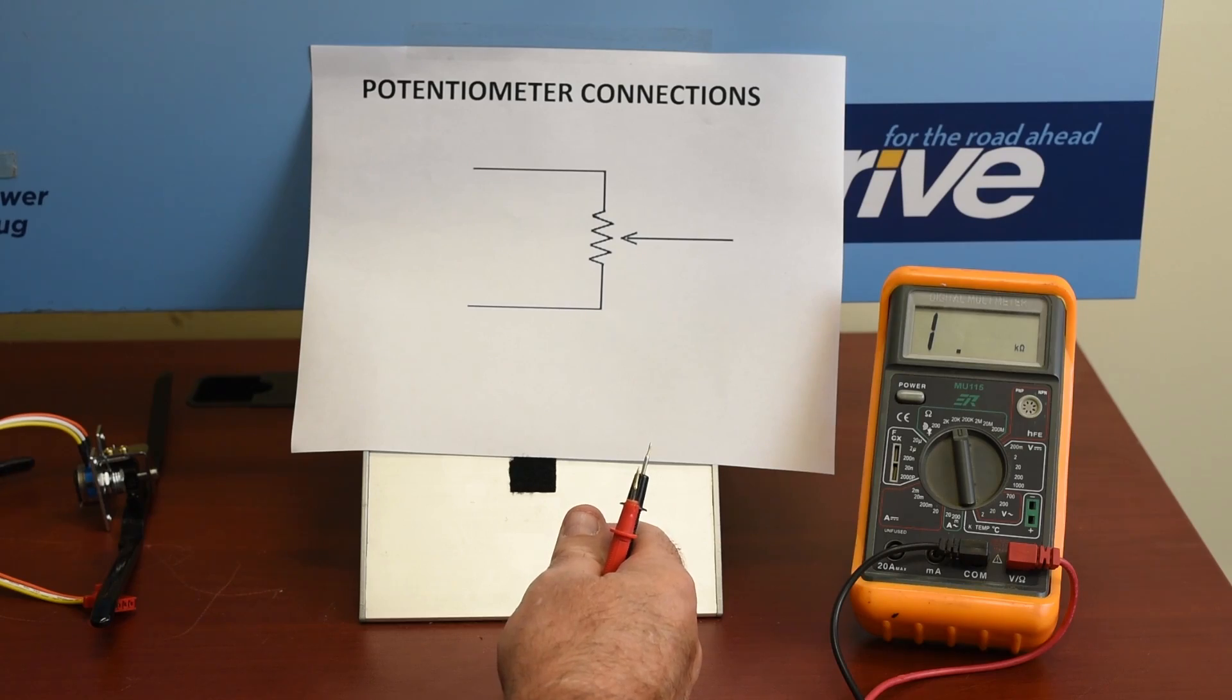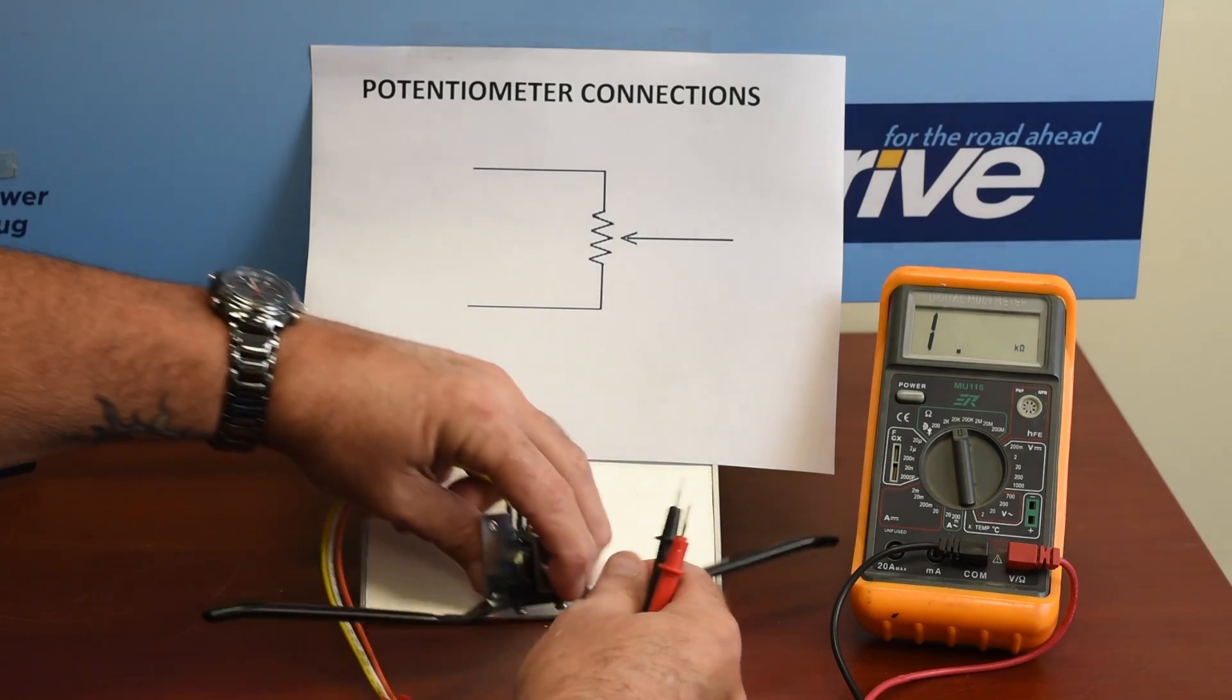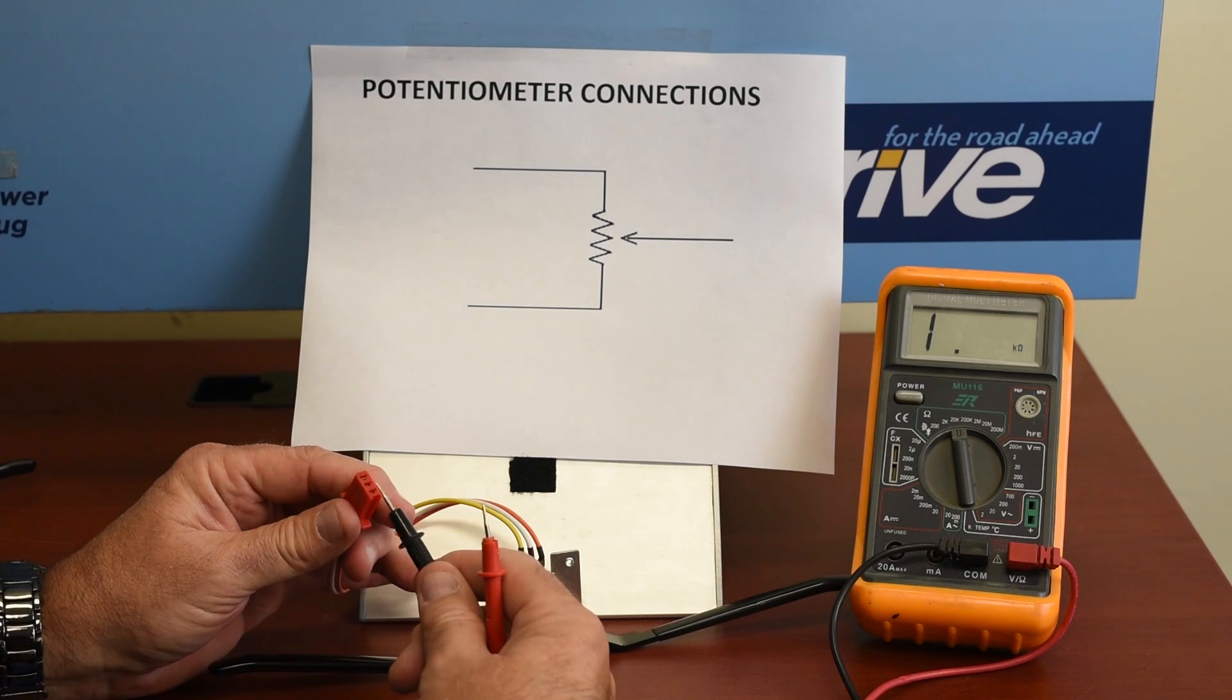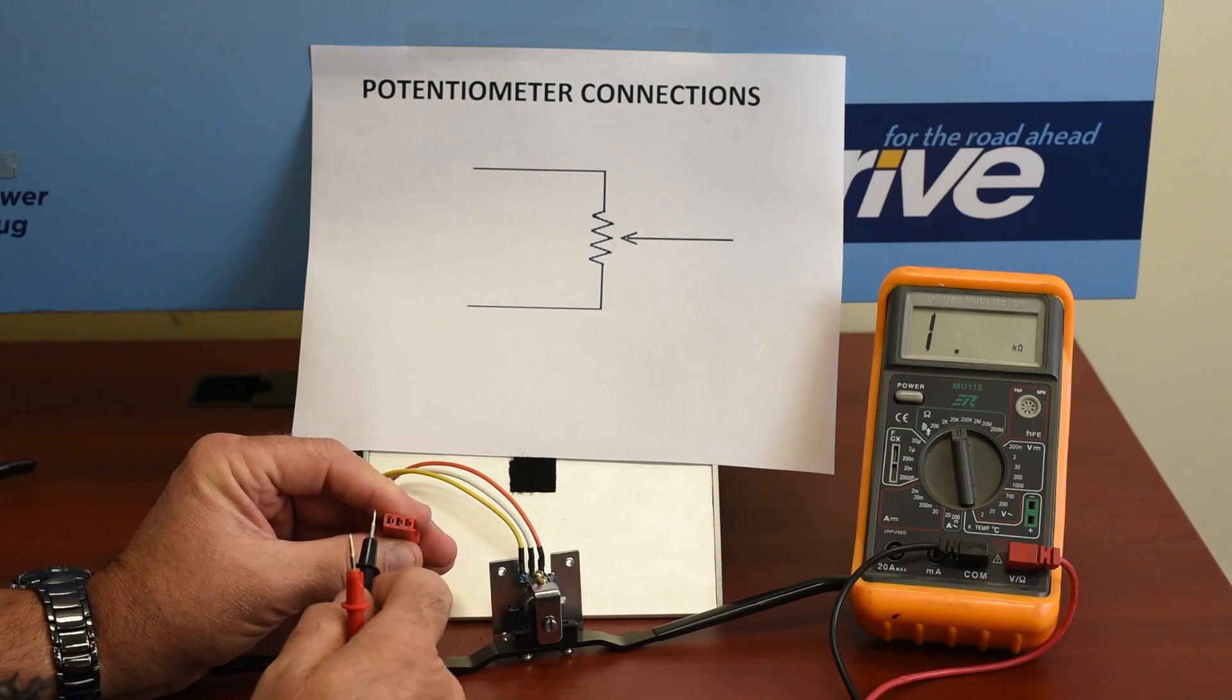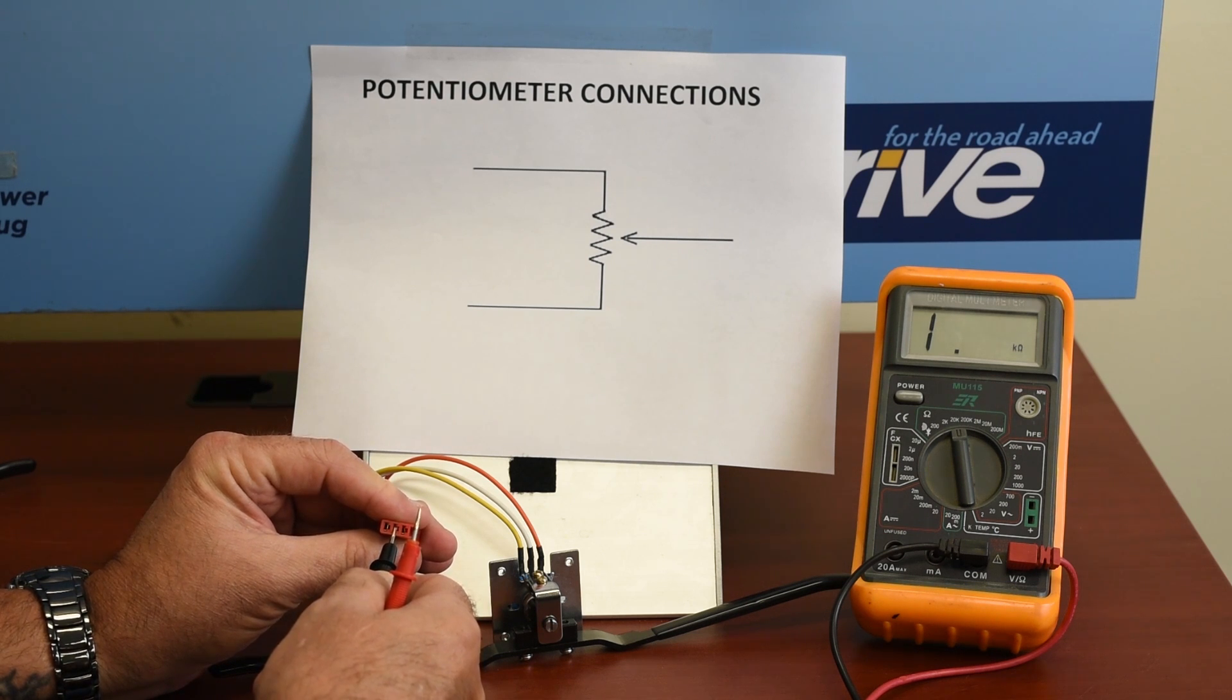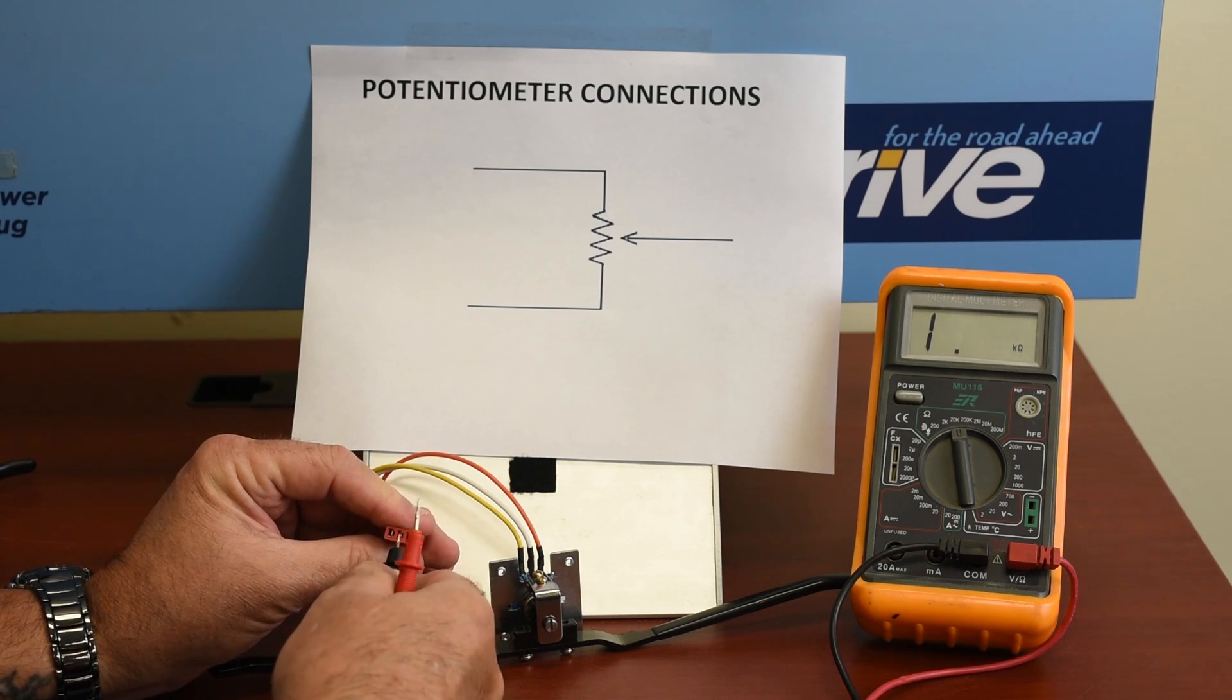So again, just to recap, you want to measure outside to outside, outside to middle, the other outside to the middle, and they should be within 10 percent of each other. And then we know that we have a good throttle pot.